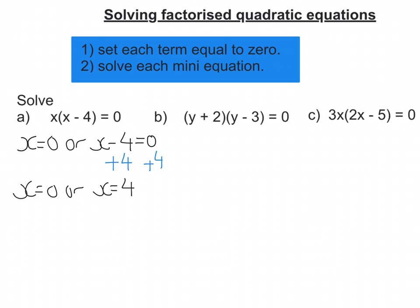Let's look at the next one. So again, set each term equal to 0. So we've got two terms multiplied to get 0, so one of them must at least be 0. So we're going to have y plus 2 is equal to 0 or we're going to have y minus 3 equal 0.